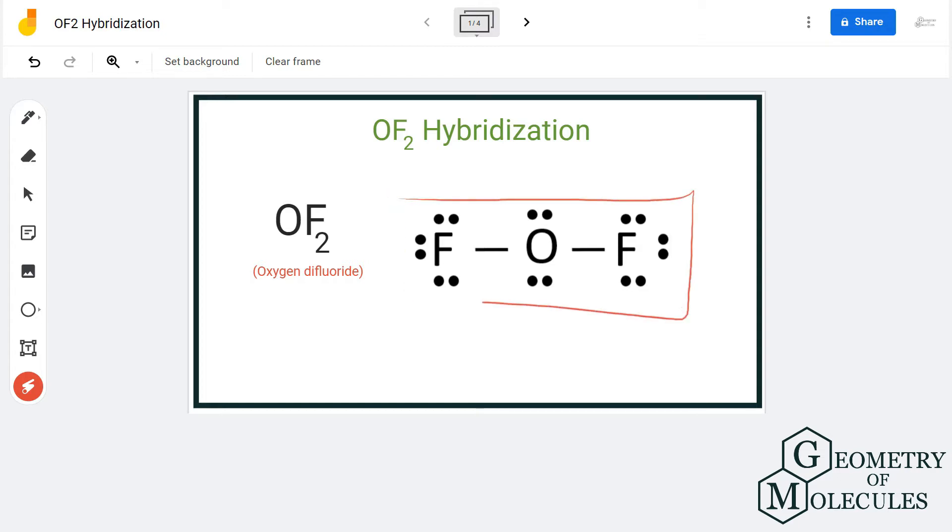We'll look at the number of hybrid orbitals formed in this structure and the hybridization. So here is the Lewis structure of OF2 in which oxygen is forming single bonds with both these fluorine atoms and there are two lone pairs of electrons on the oxygen atom.